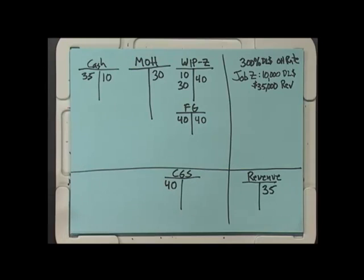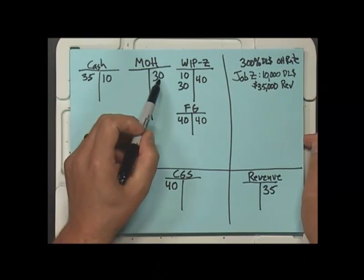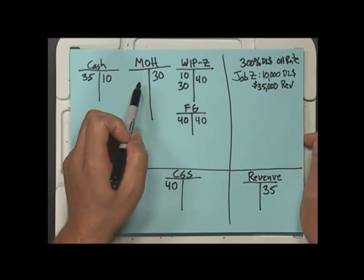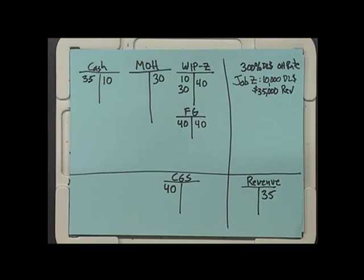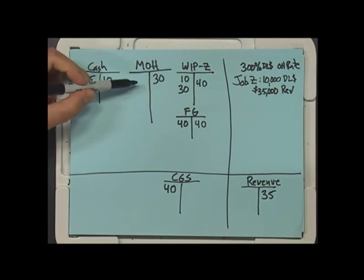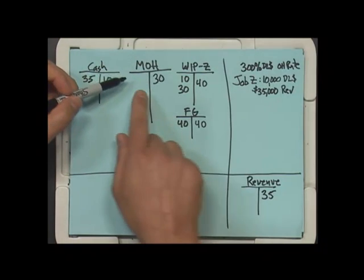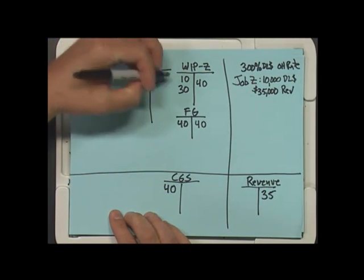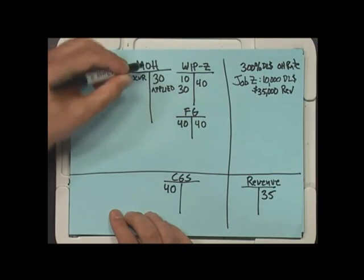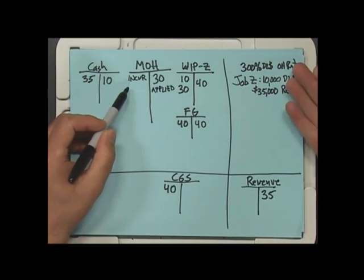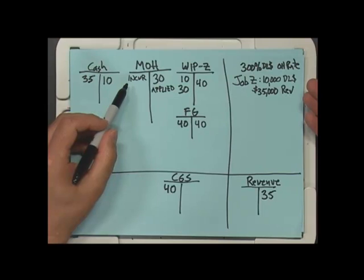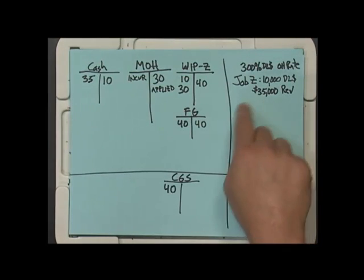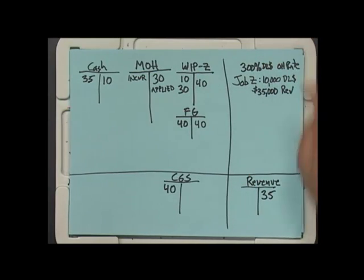There are really two problems that we've got. One is that right now we haven't incurred any overhead as a result of this job, but there's probably some variable overhead. Remember that the left side of the manufacturing overhead account is the incurred side. The right is applied. So we applied the $30,000, but we haven't incurred enough yet to figure out how much. Let me elaborate a little bit on this 300% direct labor rate because that includes both fixed and variable costs.